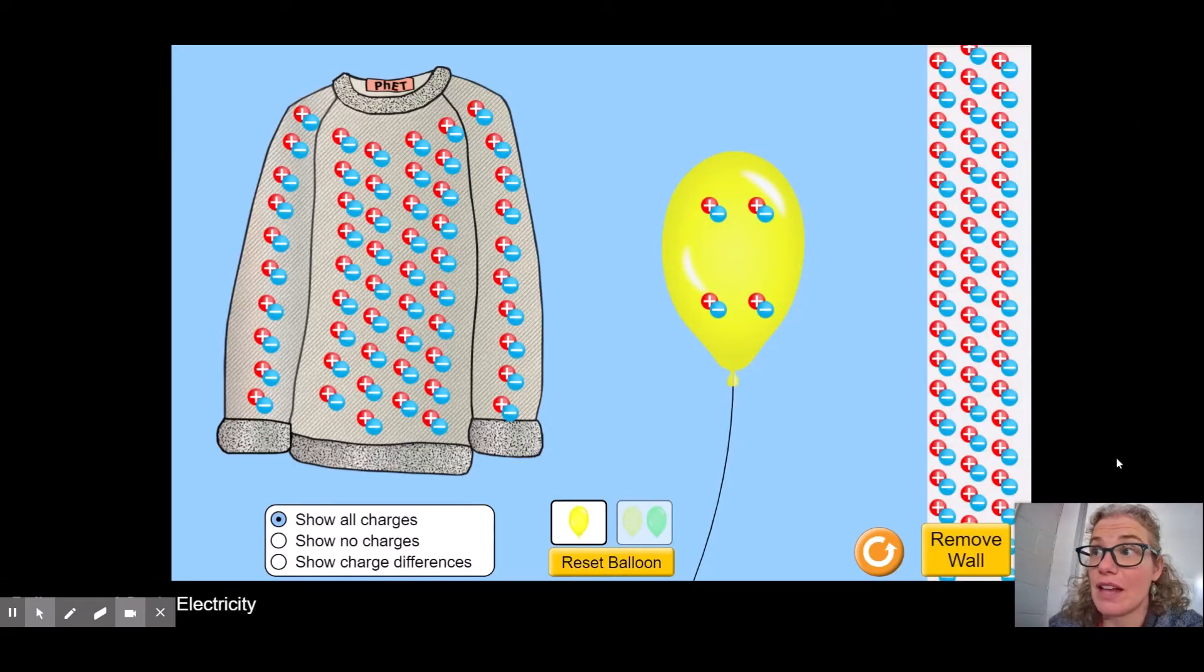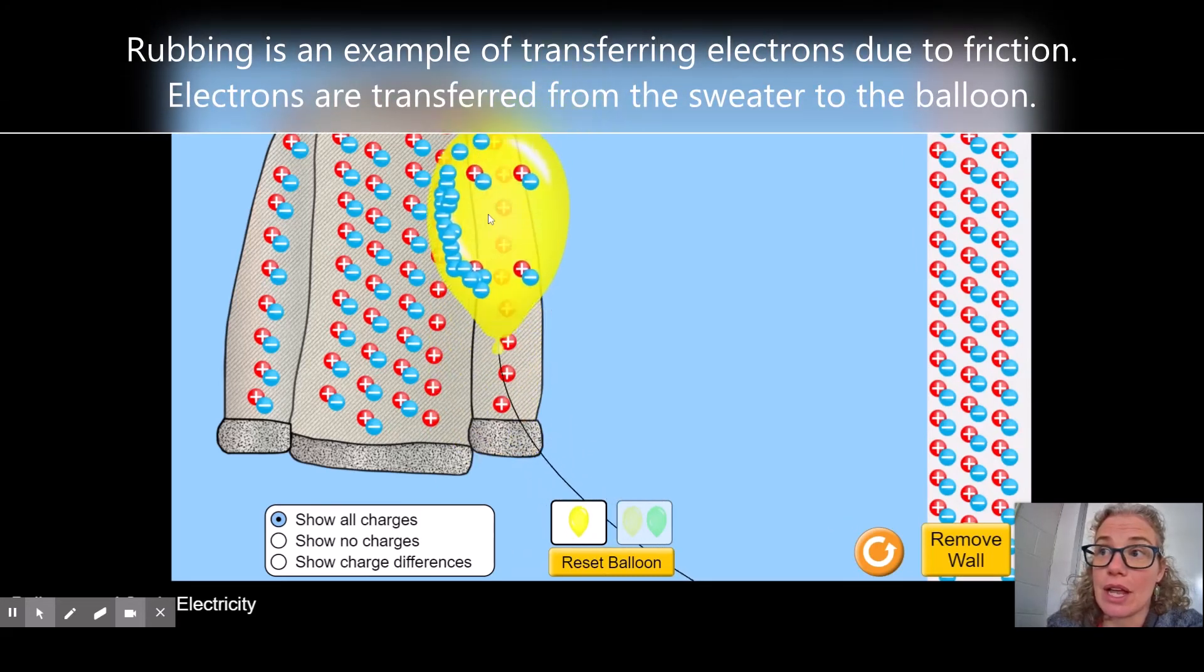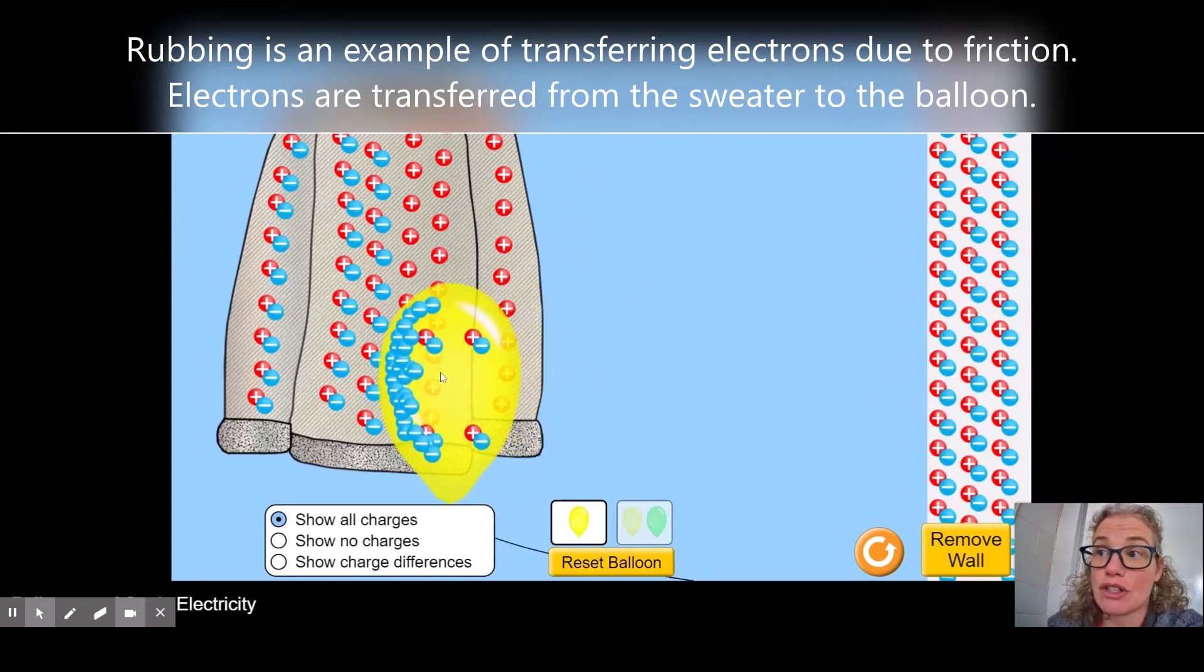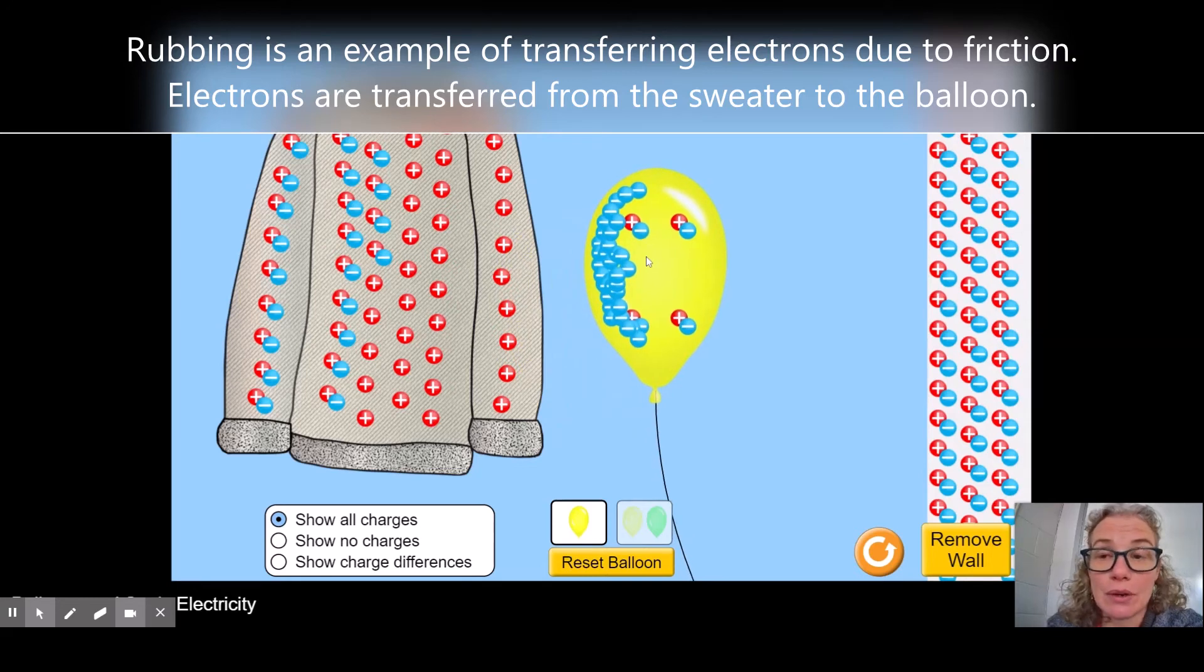So here we have another animation from PhET. This one I like a little bit better, right off the bat, in that it has both positive and negative charges, so it's representing the entire atom. And you can drag the balloon and rub it on the sweater, and you'll notice that as I rub the balloon on the sweater, the electrons are transferring from the balloon to the sweater, and you can actually see that process happening.